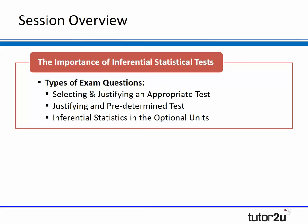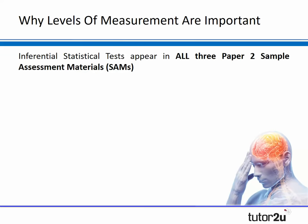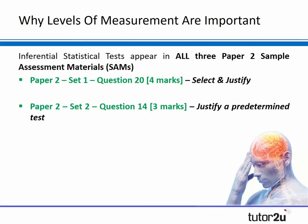These types of questions won't just appear in the research methods section — they can also appear in relationships, gender, eating, and all of the other topics. Looking at the sample assessment material, AQA have included an inferential stats question in all three of the Paper 2 sample assessment materials. That highlights that, given it's a 48-mark research methods section, there's a good chance students will need to answer at least one question, if not more, requiring knowledge of inferential stats testing.